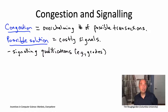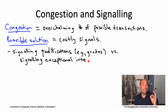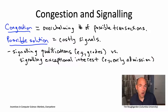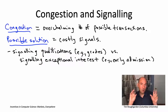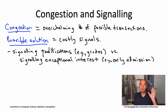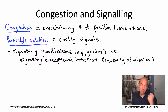What I want to talk about instead is the use of signals to indicate exceptional interest in a particular transaction. One example of this kind of signaling is applying early — early admissions for college, either binding or non-binding. That signals exceptional interest in attending that particular school. Crucially, for this to work, you can only apply early to one place — that's what gives the signal meaning. You signal to that college that you wanted to apply there, and they know you didn't signal anybody else, so it's a credible signal of exceptional interest.